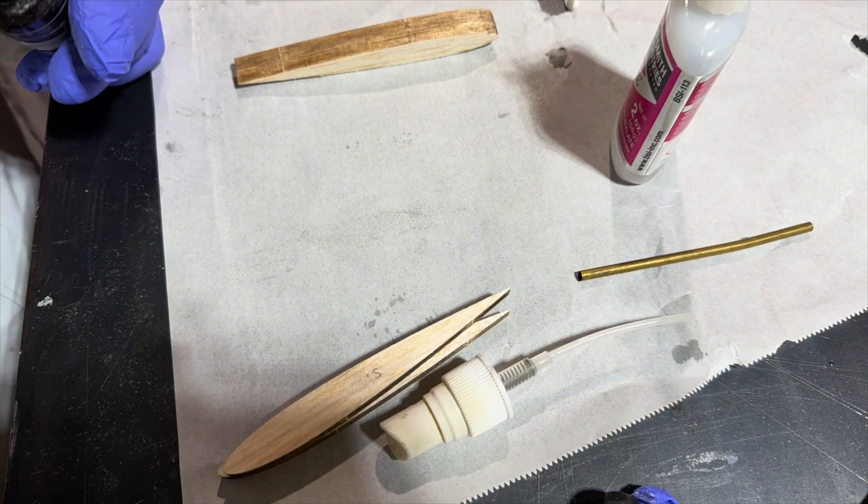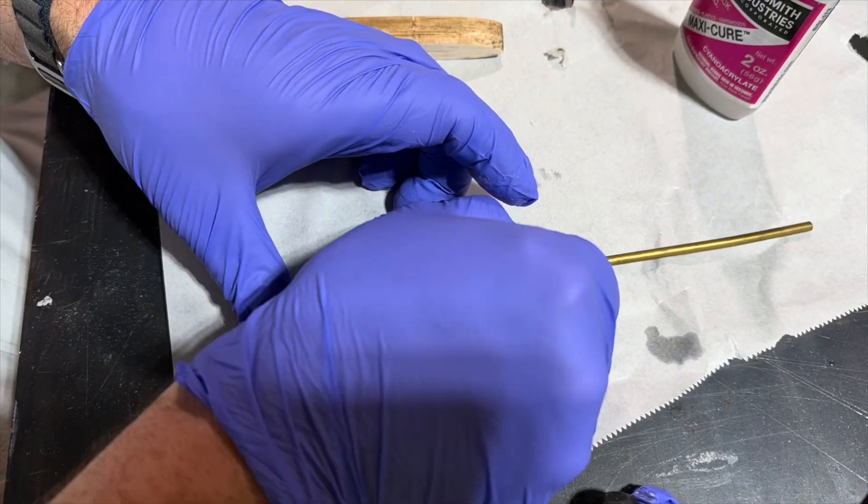So these are the end pieces that'll get glued to the horizontal stabilizer and then they'll get shaped.